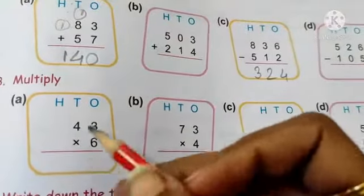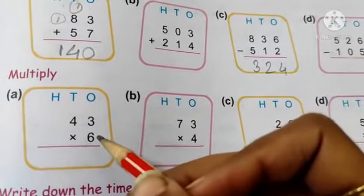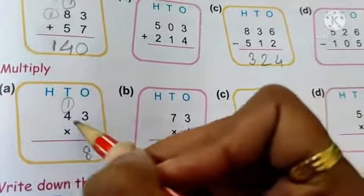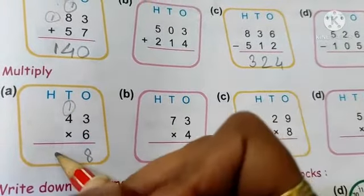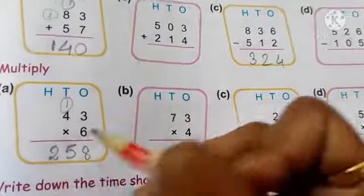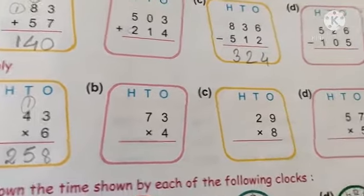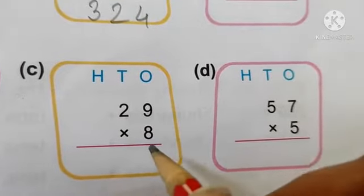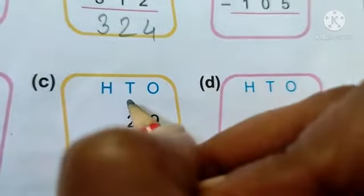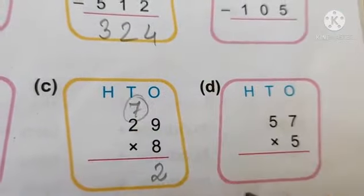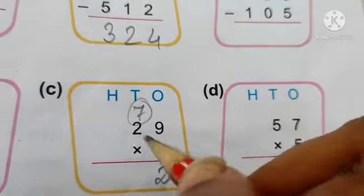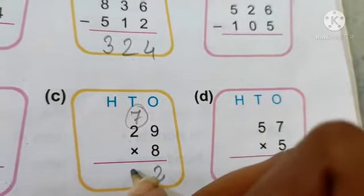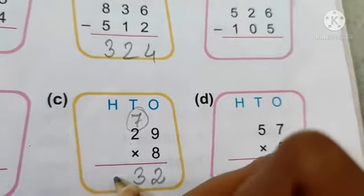Multiply 643 by six — six times three is eighteen, write eight carry one; six times four is twenty-four plus one is twenty-five, write five carry two; total is two hundred fifty-eight. Multiply twenty-nine by eight — nine times eight is seventy-two, write two carry seven; two times eight is sixteen plus seven is twenty-three — answer is two hundred thirty-two.